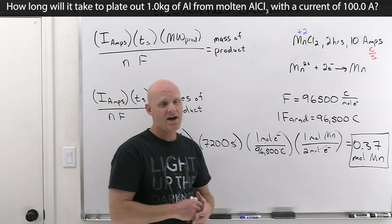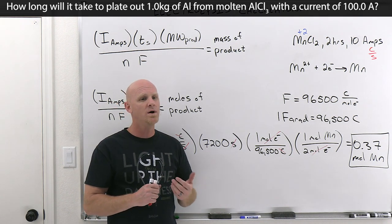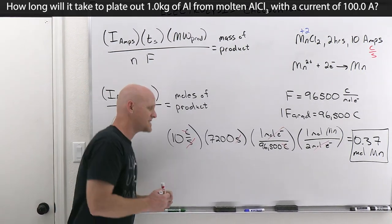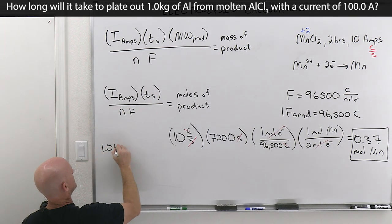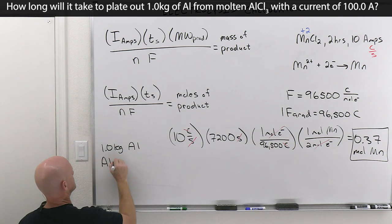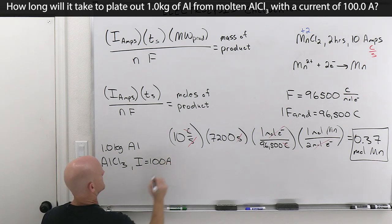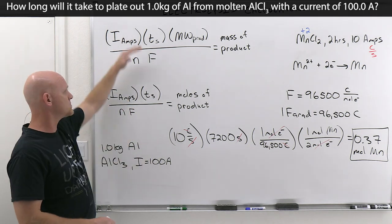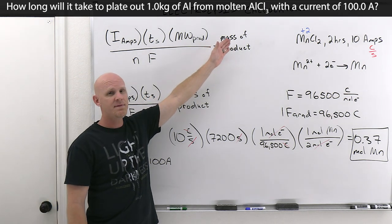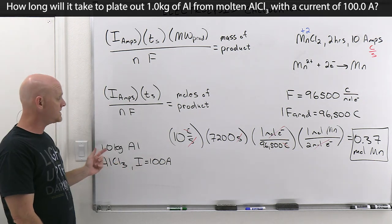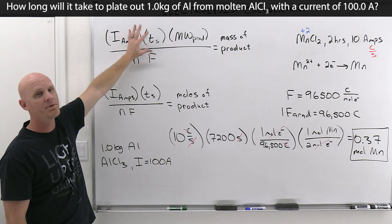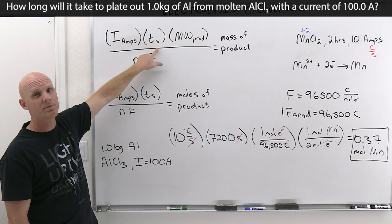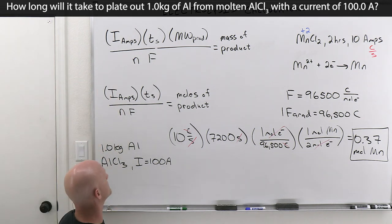Let's do one more. How long will it take to plate out 1.0 kilograms of aluminum from molten AlCl₃ with a current of 100 amps? Now we're solving for time. Since we're dealing with mass of product (1.0 kg), we use the grams equation. The product is aluminum from AlCl₃ — aluminum is in the +3 oxidation state — so the half reaction is Al³⁺ + 3e⁻ → Al. It takes three moles of electrons to make one mole of aluminum.